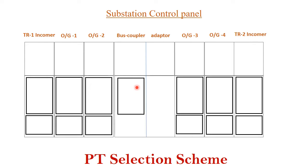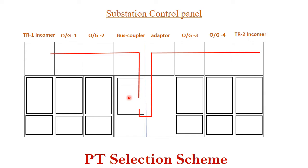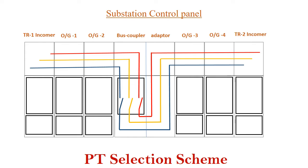Now let us understand how the bus is formed inside this panel board. From the incoming panel, our phase is coming through the bus coupler, and through the bus coupler it gets connected to another section of the bus. In this bus coupler, the breaker plays an important role of connecting bus section one and bus section two. So whenever this breaker is on, bus section one will be connected to bus section two. Similarly, this is happening for Y and B phase inside this panel board.